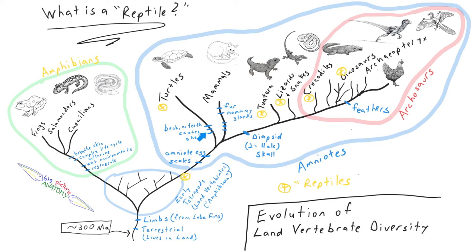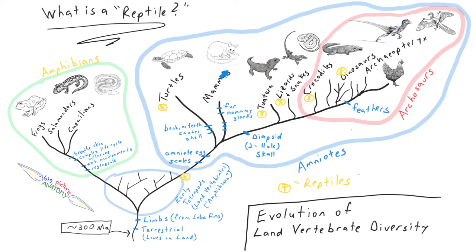Turtles have big scales called scutes on their back, forming a big shell around almost the vertebrae. They have a beak with no teeth, a very different-looking skull, and a body form that has not changed much over hundreds of millions of years. The mammals eventually evolve fur, mammary glands, and live birth, and become a very distinct group with many other characteristics like the shape of the heart, the pattern of circulation, the digestive pattern, and even the bones of the limbs and position of the muscles, all uniting the mammals together.